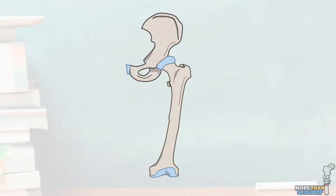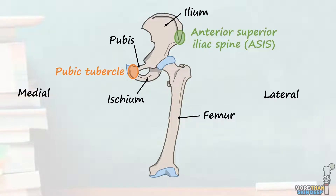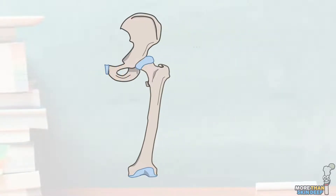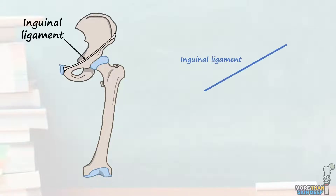First, let's get oriented to what we're looking at. This is the top of the leg with the bones of the pelvis here and the femur here. This is the lateral side and this is the medial side. This is the pubic tubercle of the pelvis and this is the anterior superior iliac spine, or ASIS. Running from the ASIS to the pubic tubercle is a very important structure known as the inguinal ligament, which is the superior border of the femoral triangle.